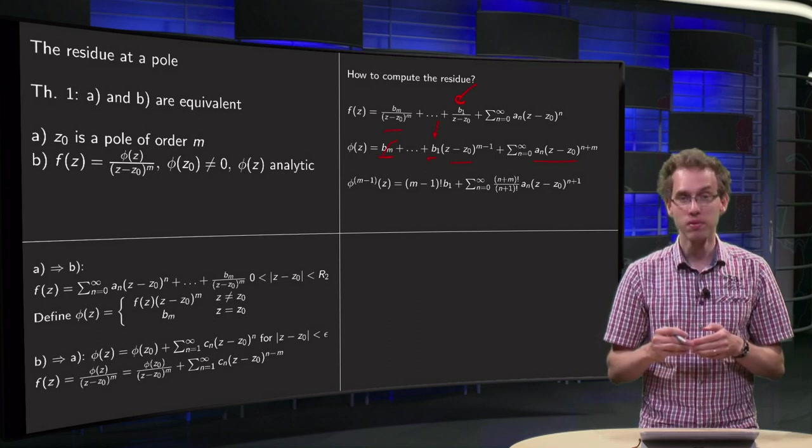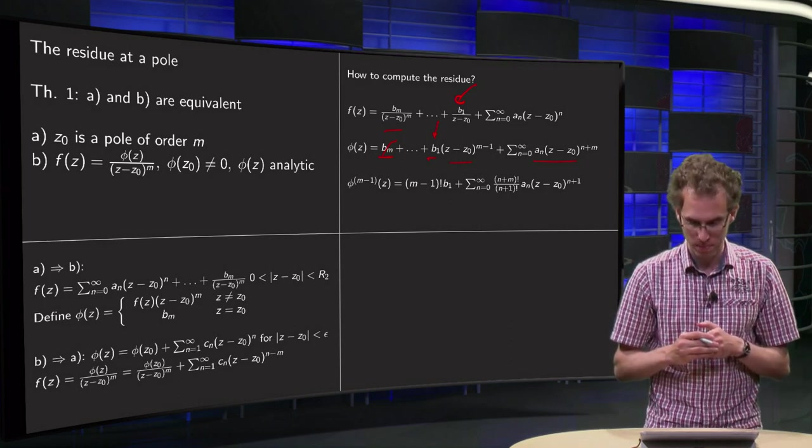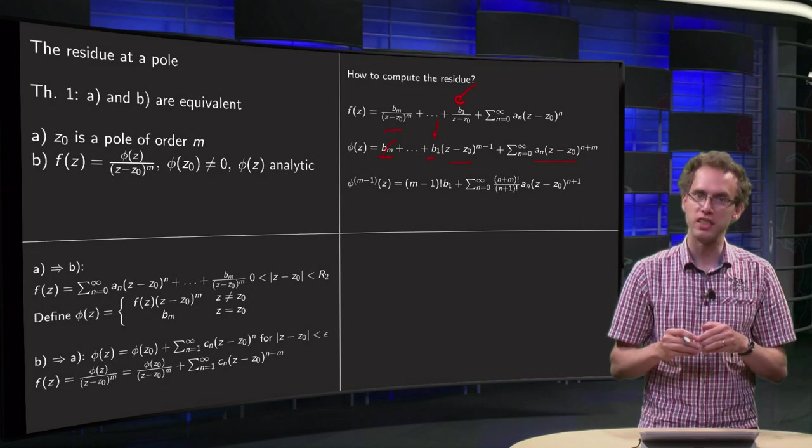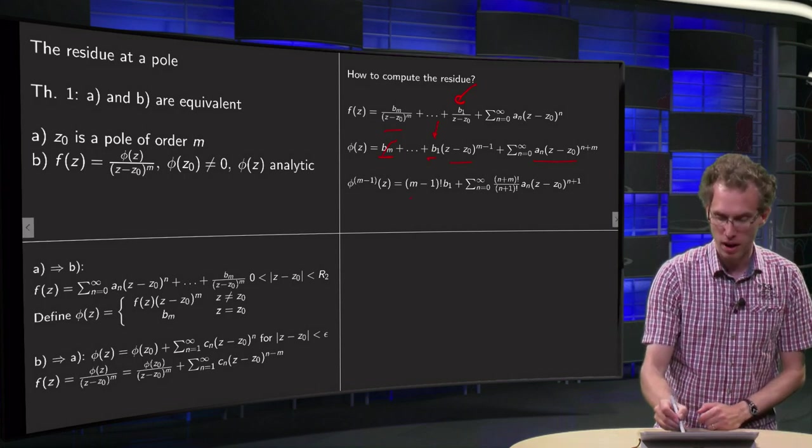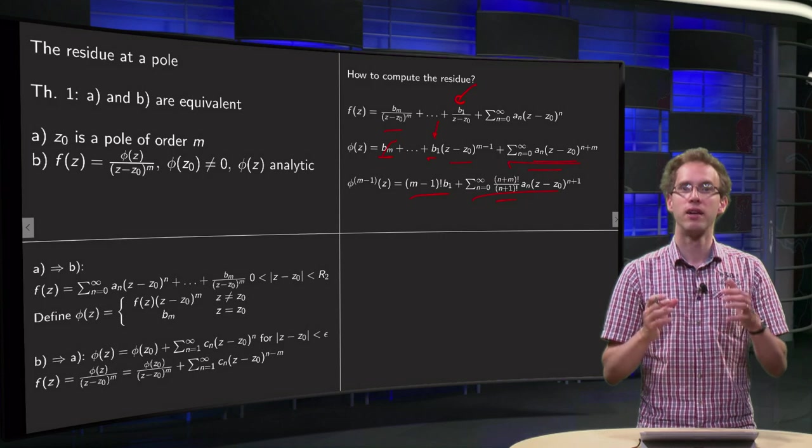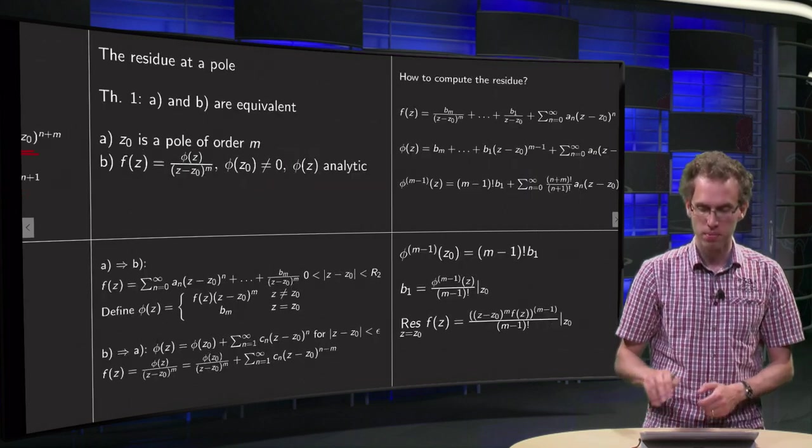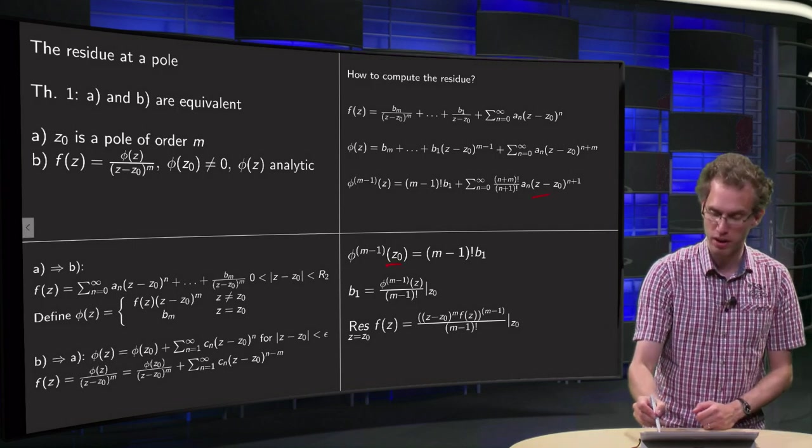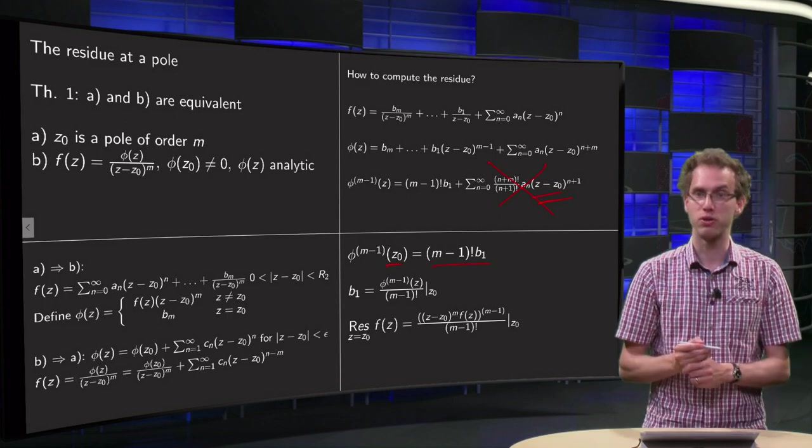So how many times do we have to differentiate? Well, we want to get rid of terms up till (z-z0)^(m-1), so if we differentiate m-1 times, this whole first part vanishes, and the new first term becomes (m-1)! times b1, plus everything which comes from this part, plus some horrible rubbish. We still don't know the b1, but fortunately we can get rid of this rubbish by now plugging in z0, because if you plug in z0, here you have all kinds of positive powers of z-z0, and this part drops out, and you get (m-1)! times b1.